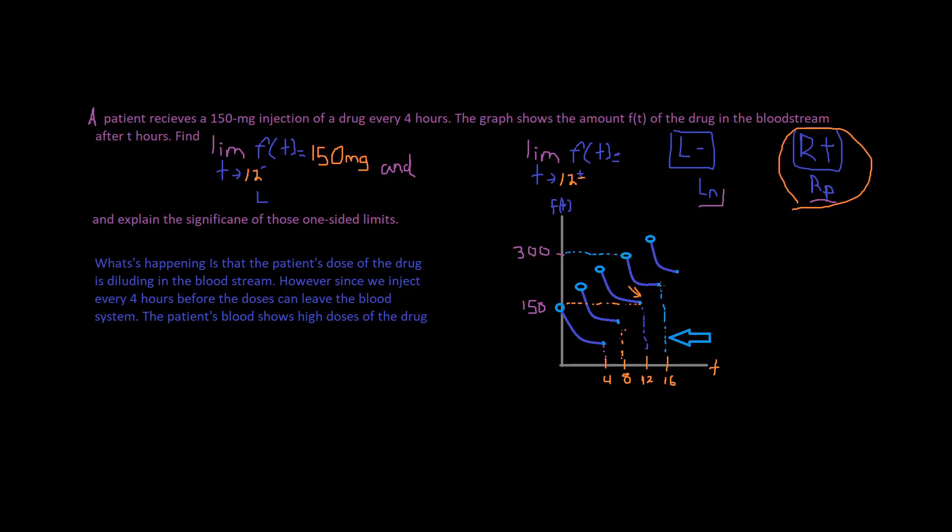But we don't stay on 16 forever. So we're going on the right-hand side. Boom, 12. And so this approaches the same thing. 12 approaches, has this little dotted line that goes up from this closed interval to this open interval of 300. And so it appears that our limit approaches 300.